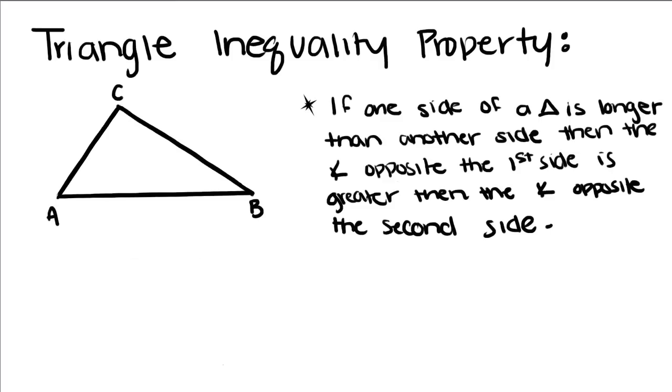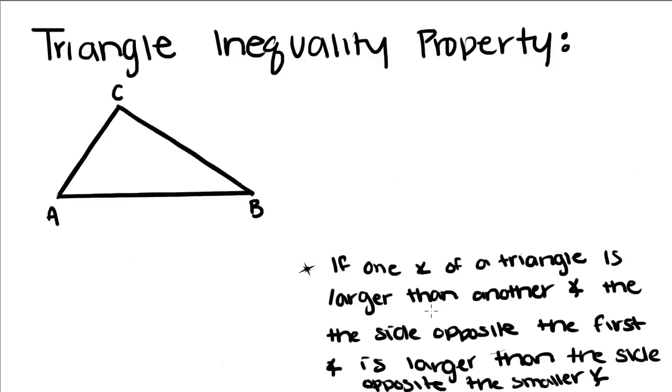So our next property says that if one angle of a triangle is larger than the other angle, the side opposite the first angle is longer than the side opposite the smaller angle. So this is basically like the last one, just reversed.